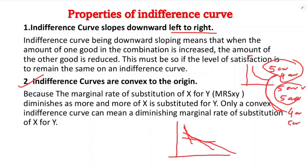Because of the diminishing marginal rate of substitution, the indifference curve becomes convex to the origin.